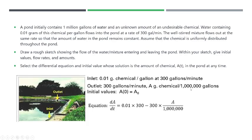And it's leaving at 300 gallons per minute. The amount of chemical in the tank at any time is A grams, and there's 1 million gallons of water in the tank at any time. So you have A grams over 1 million times 300. Notice that the units work—the gallons will cancel and you have grams of chemical per minute. A is measured in grams of chemical, T is measured in minutes.